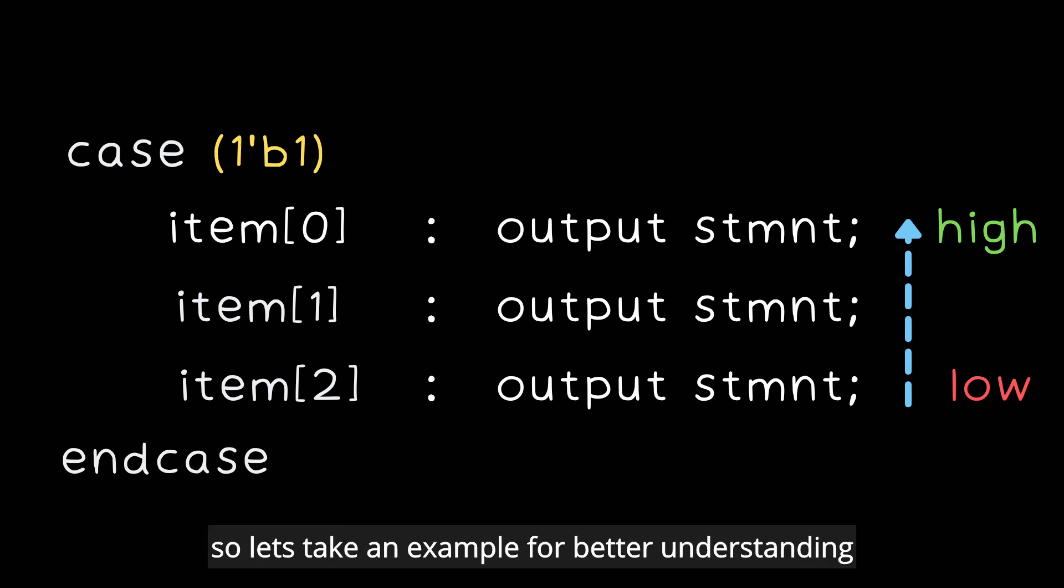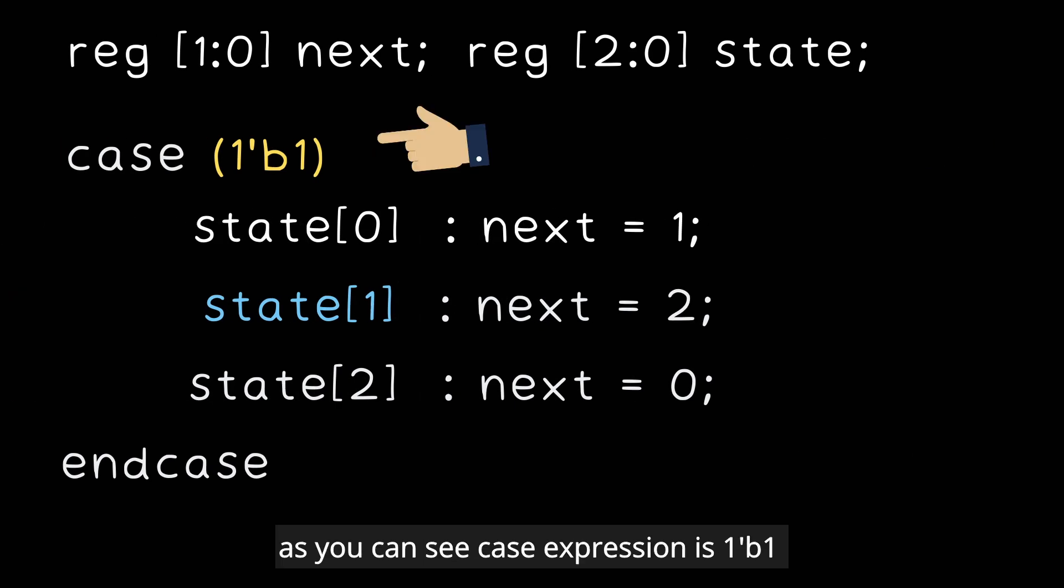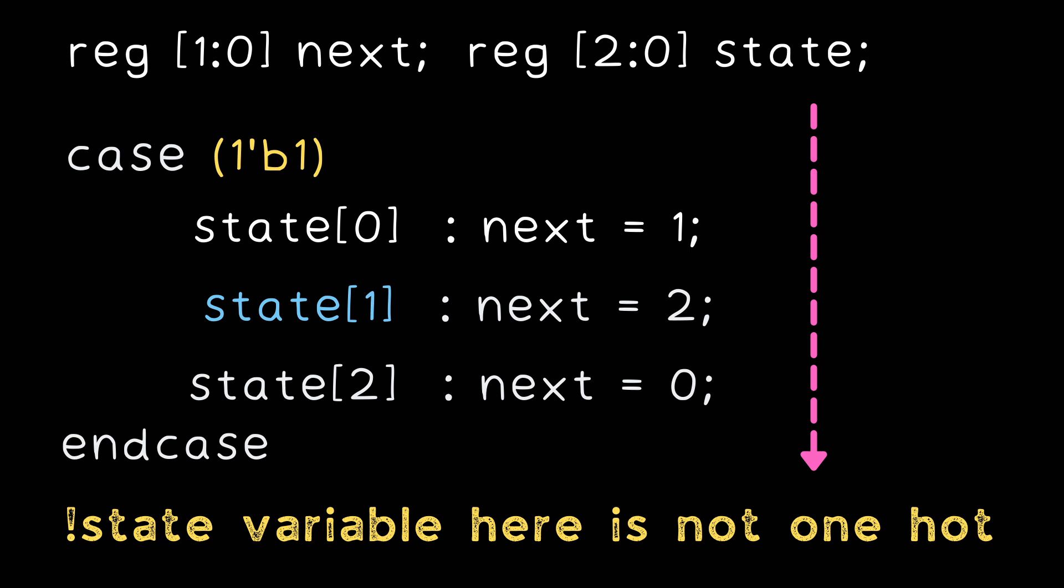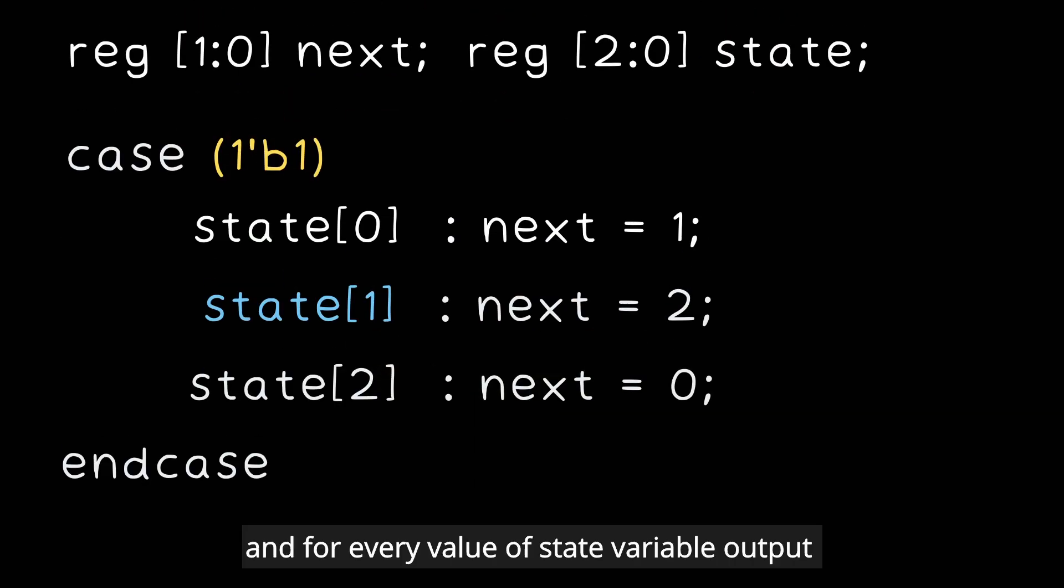Let's take an example for better understanding. As you can see over here, the case expression is 1'b1 and instead of regular case item, we are using each index of state variable. Here the state variable is not one hot encoded. So the state variable can have the value from 0 to 7 and for every value of state variable output next is specified. So this is a full case statement and the default case is not required here.